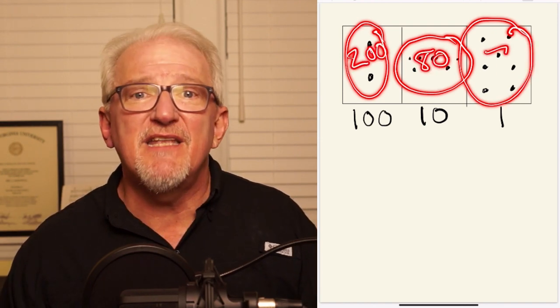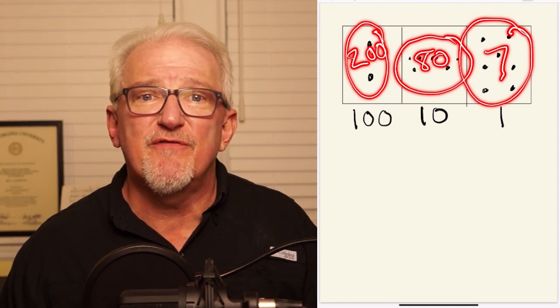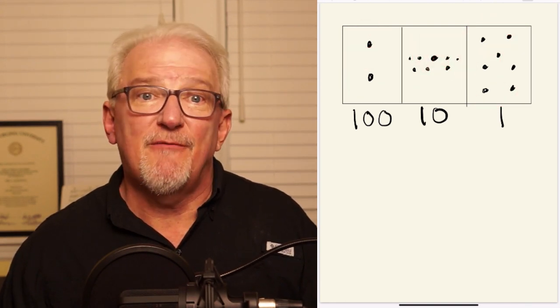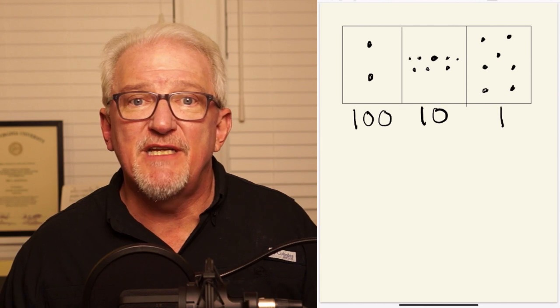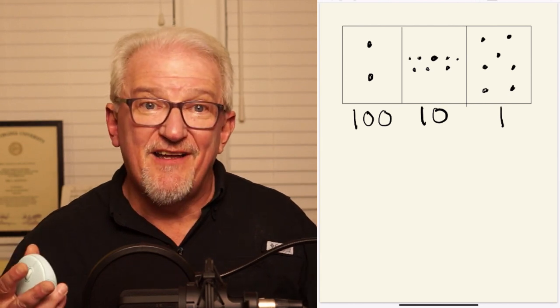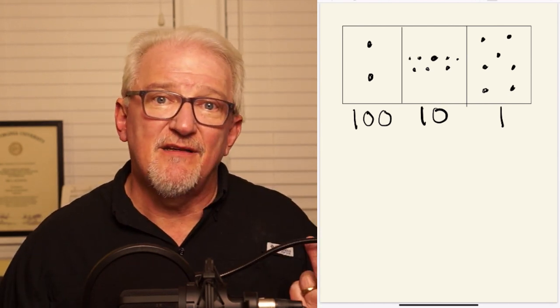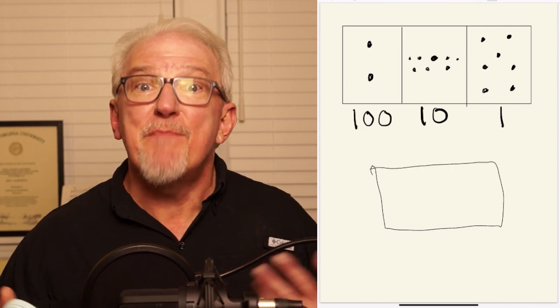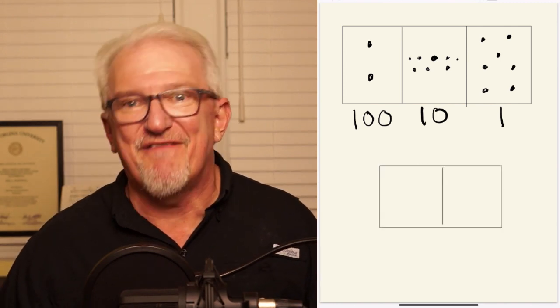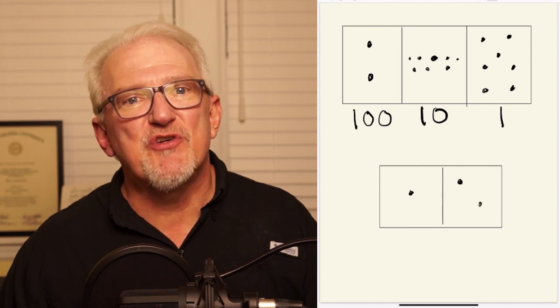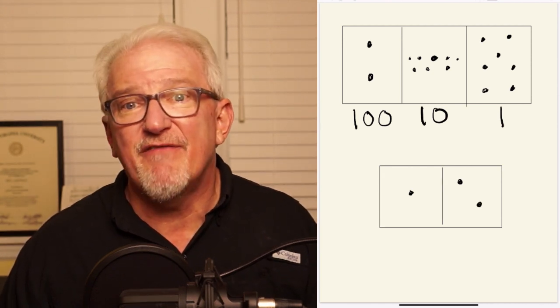We now want to divide these 287 dots into groups of 12. Well, 12 is represented by one dot followed by two dots. Therefore, we will look for pictures of one dot followed by two dots in our picture representation of 287.